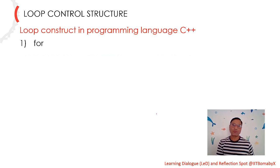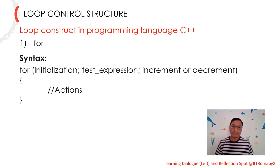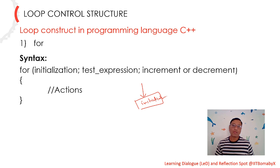If we look at the for loop, the syntax consists of initialization, the test expression, increment or decrement, and the action. When the for loop executes, the first part that executes is initialization. Once initialization is done, it will immediately check the condition.